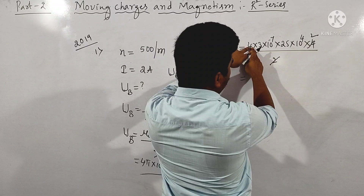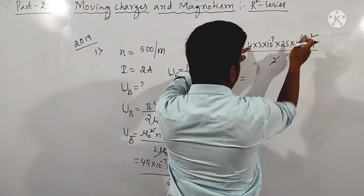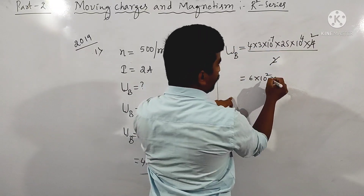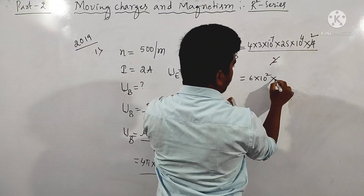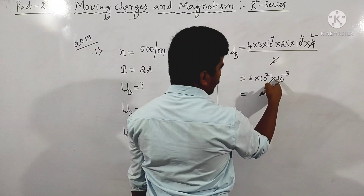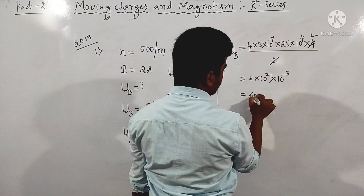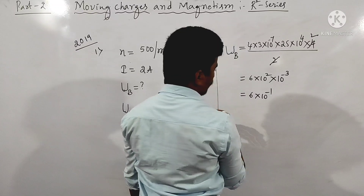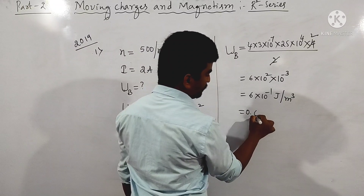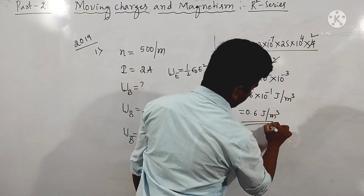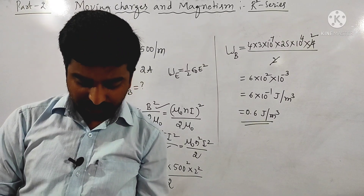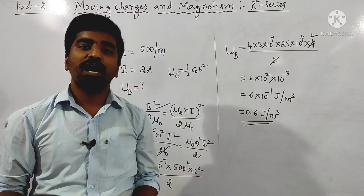The calculation gives 10 to the power of 2 into 10 to the power of minus 7, which is 10 to the power of minus 3, times the numerical factors. After simplification, 6 into 10 to the power of minus 1, so the energy density becomes 0.6 joule per meter cube. The nearest answer in the options is 0.628 joule per meter cube, so the answer is option B.